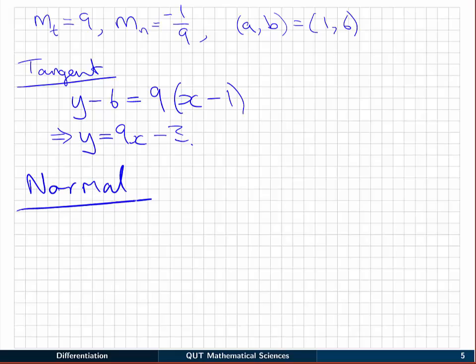And we do the same thing for the normal line. It will be y - 6. This time the slope changes to -1/9, and again x - 1.